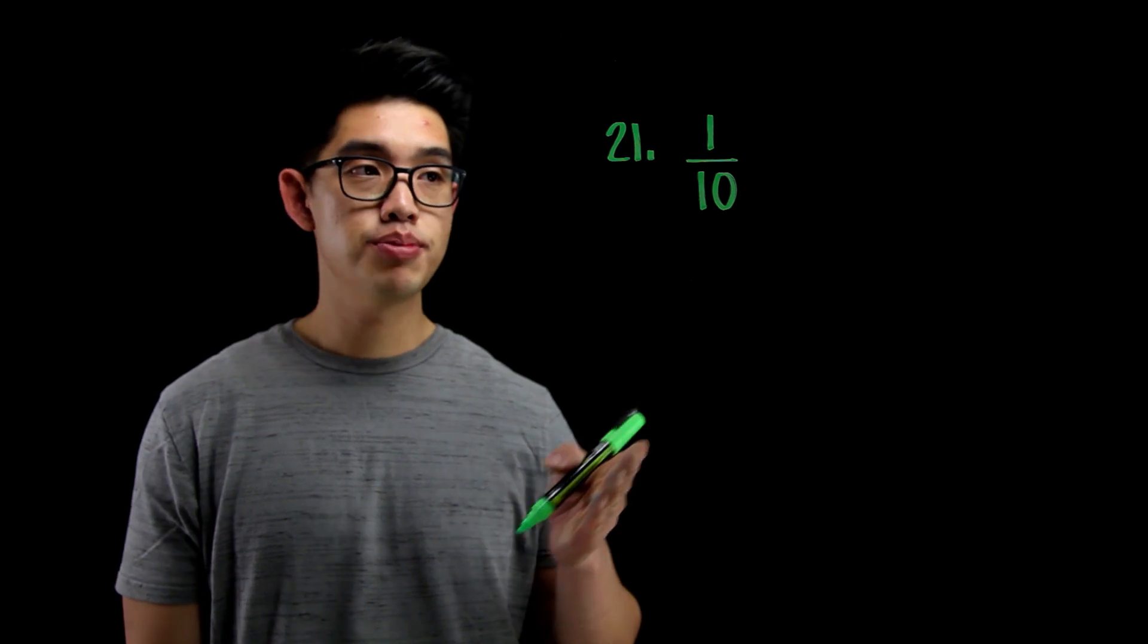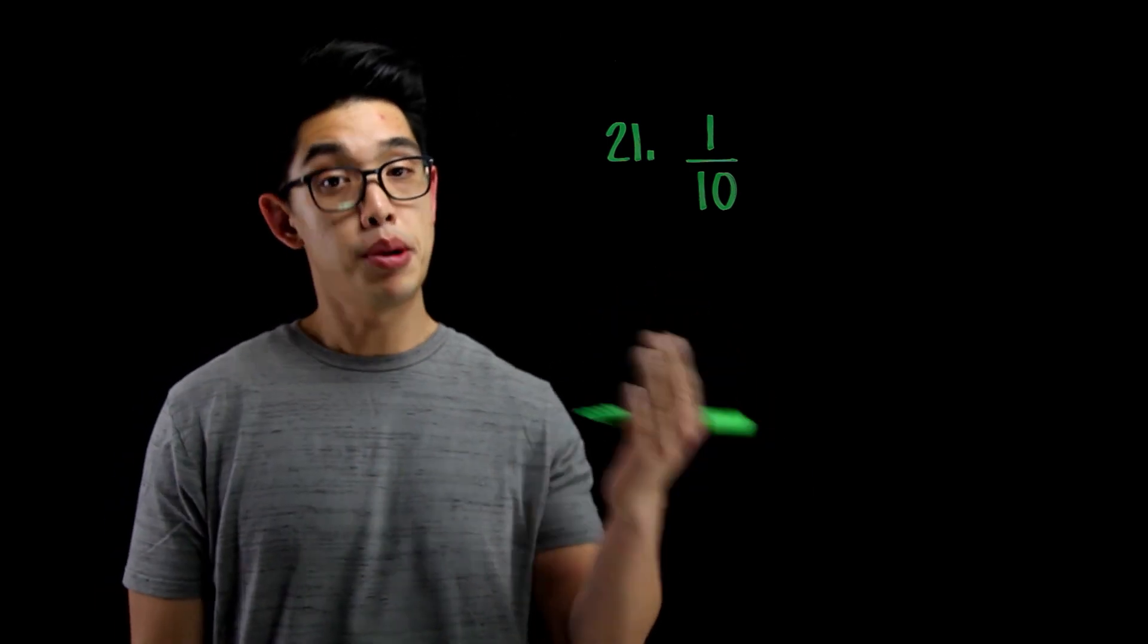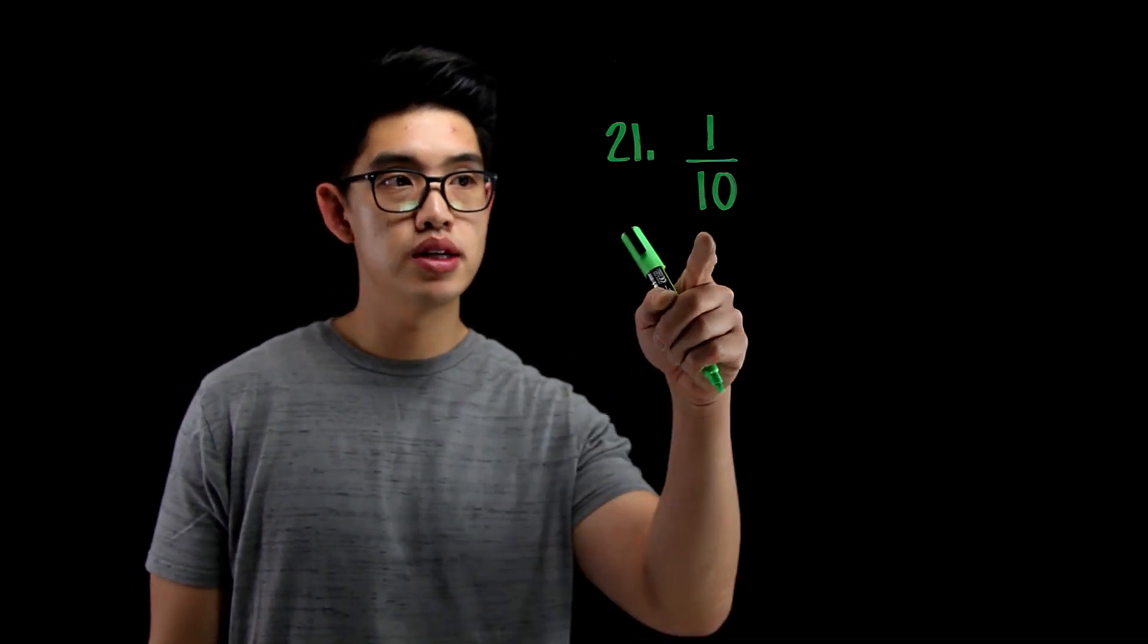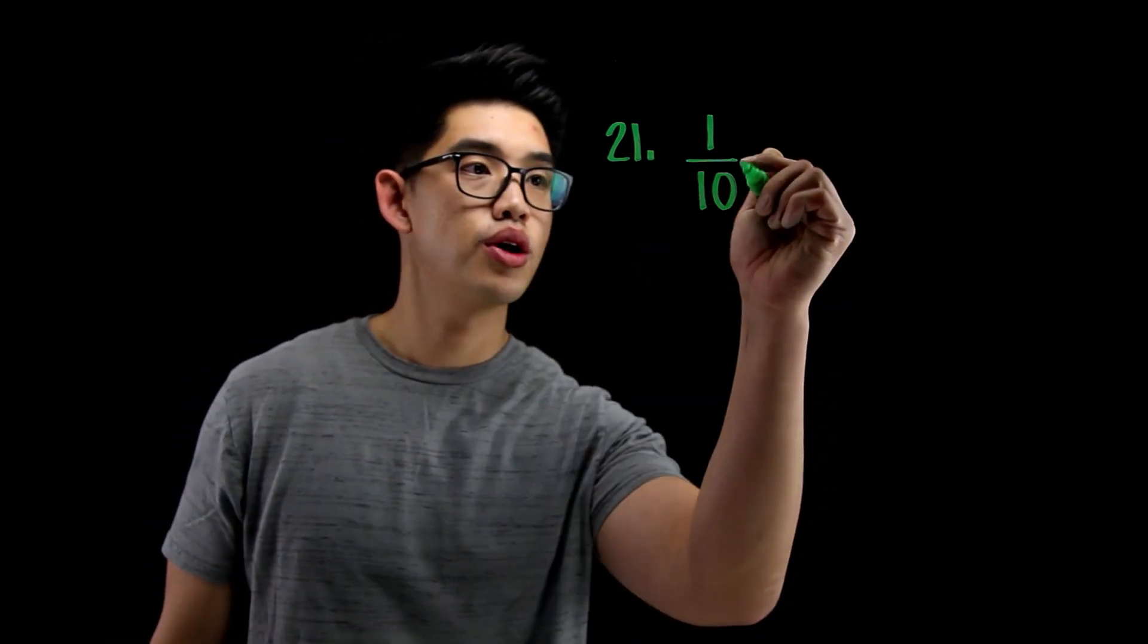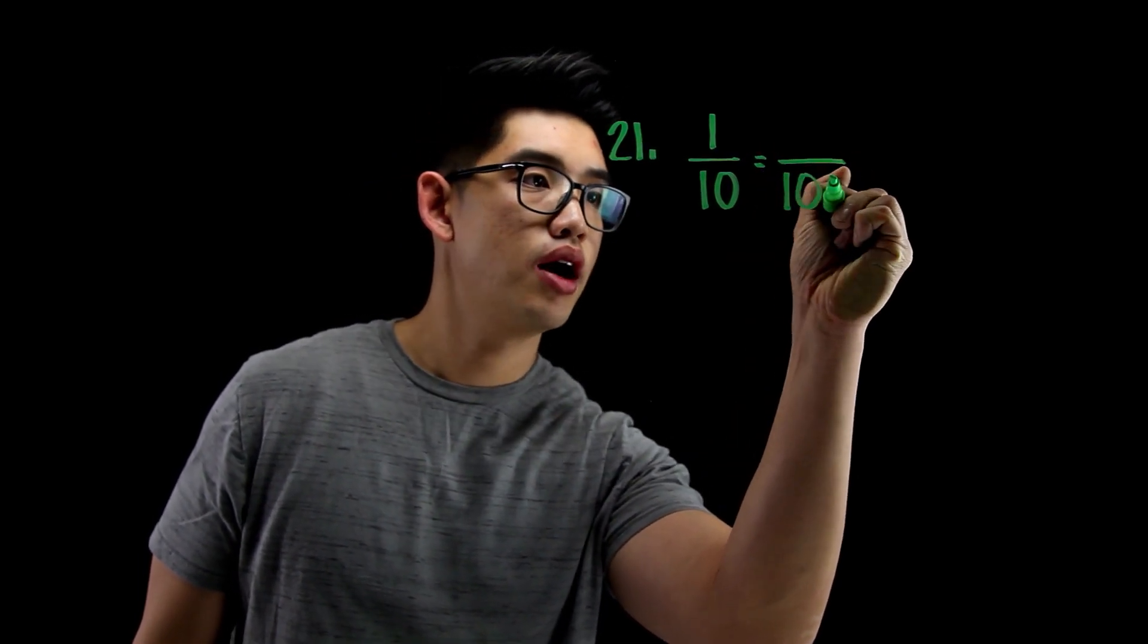Now, there are a lot of ways you can do this, but I think the easiest way you can think about this is, well, percent means per 100. I got to make this into a denominator with 100. So I'm going to write equals to and try to convert that into a denominator of 100.